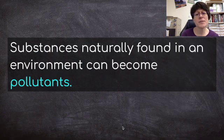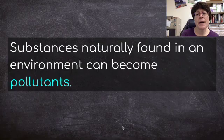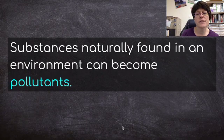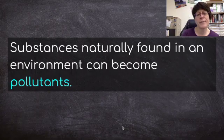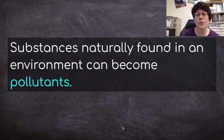Substances naturally found in an environment can become pollutants as well. For example, with water pollution, using water to cool turbines at electric plants and putting the warm water back into a stream can cause thermal water pollution. That water is natural, but because we heated it up, it becomes a pollutant and can make the environment unsuitable for some things to live in.